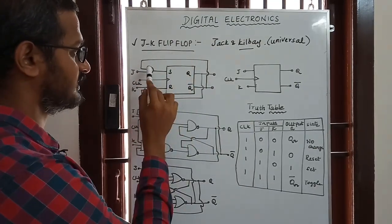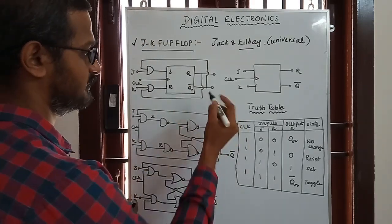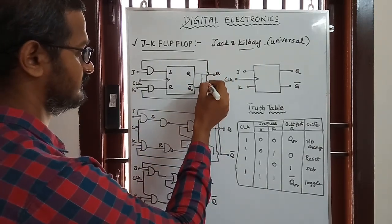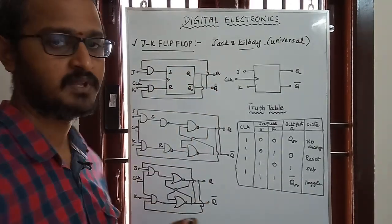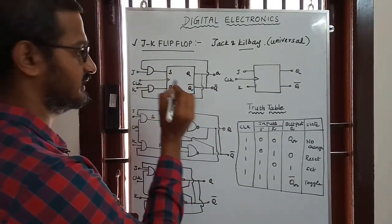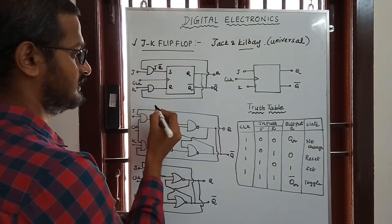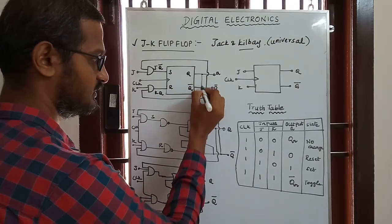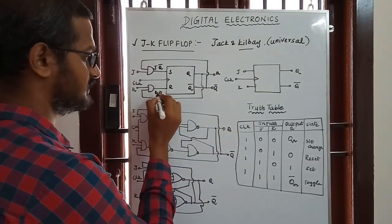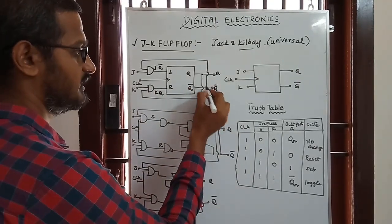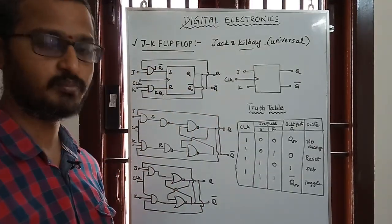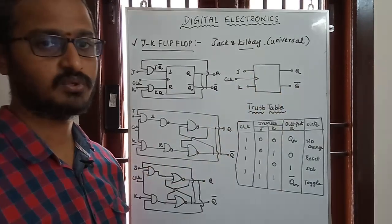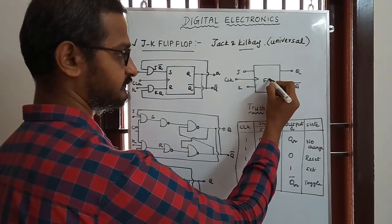If you look at the inputs, you can see Q-bar fed back. The logic diagram of the JK flip-flop shows J connected with Q-bar, and K connected with Q. So J into Q-bar and K into Q are the feedback connections forming this logic diagram.